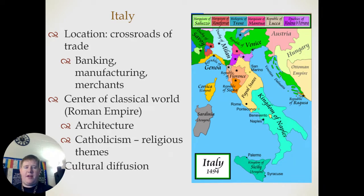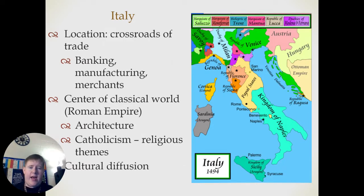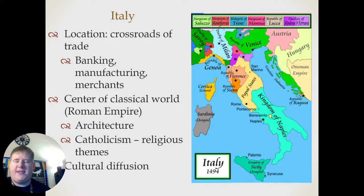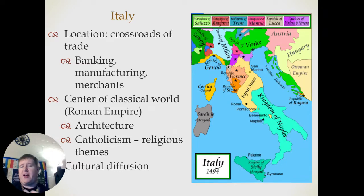Italy is a major player when it comes to the Renaissance. It's a crossroads of trade. Banking, manufacturing, and merchants are all based here. It was the center of the classical world, being the home of the Roman Empire — along with its unique architecture, Catholicism, religious themes, and the idea of cultural diffusion. Cultural diffusion is the process in which culture spreads out over a geographical area over time. We're going to talk a lot about how Renaissance ideas began to spread across Europe.